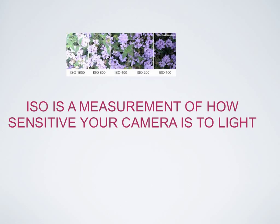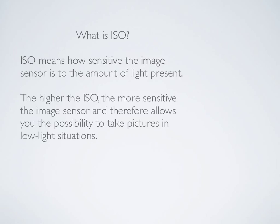What is ISO? ISO is essentially a measurement of how sensitive your camera is to light. As you can see in the photos of the flowers, we have our higher ISO numbers of 1,600 down to our lower ISO numbers of 100, and you can tell some of the differences between the different images. ISO simply means how sensitive the image sensor is in the camera to the amount of light present. The higher the ISO number, the more sensitive the image sensor in your camera is, and therefore allows you the possibility to take pictures in very low light situations.